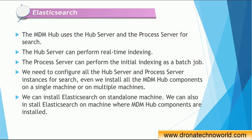The process server can perform the initial indexing as a batch job. We have a batch job in Informatica MDM to index the data, and this is handled by the process server because the data volume will be high and the process server is more capable of handling high volumes. Hence the process server handles the initial indexing. We need to configure all the hub server and process server instances for search - both servers need to be configured.